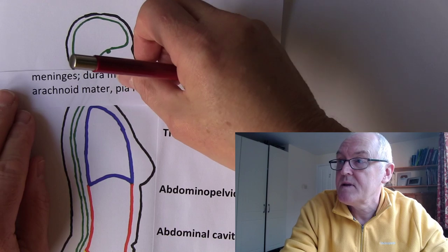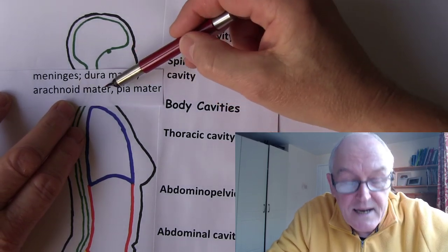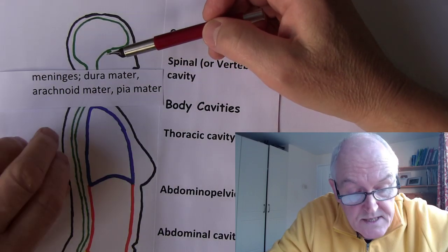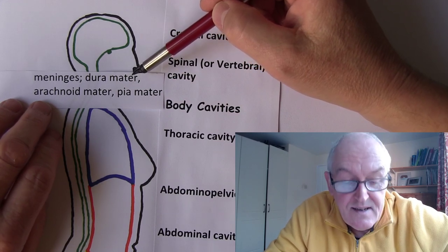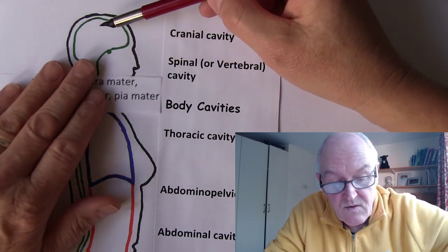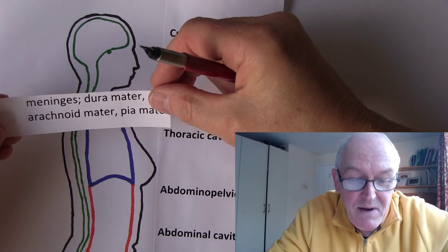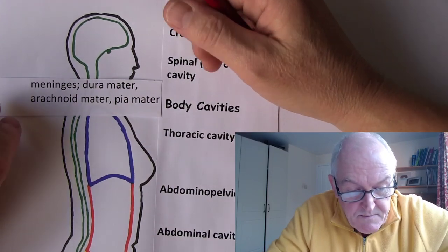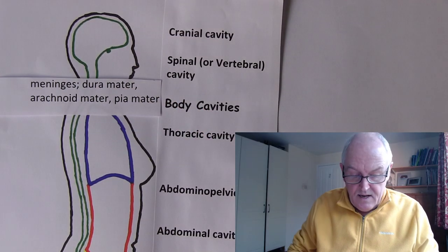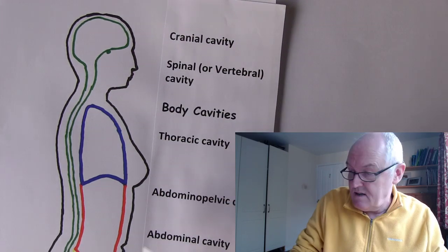The membranes in the cranial and vertebral cavities are called the meninges. There are three meningeal layers: the dura mater, the arachnoid mater, and the pia mater. Together these form the meninges. 'Mater' is a Latin word meaning mother, so the meninges are described as the mother of the brain — though they surround the entire central nervous system. You've probably heard of meningitis, a life-threatening condition involving infection, or more precisely inflammation, of the meningeal layers.